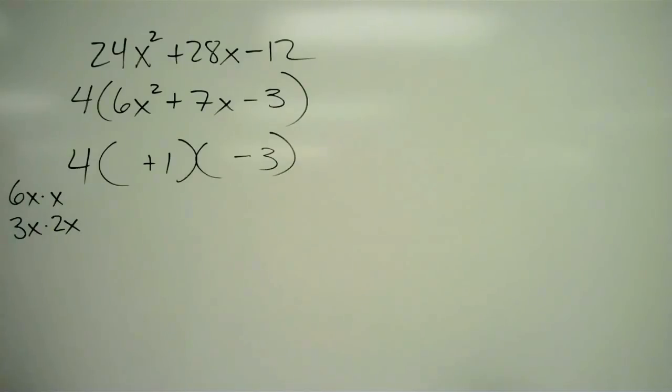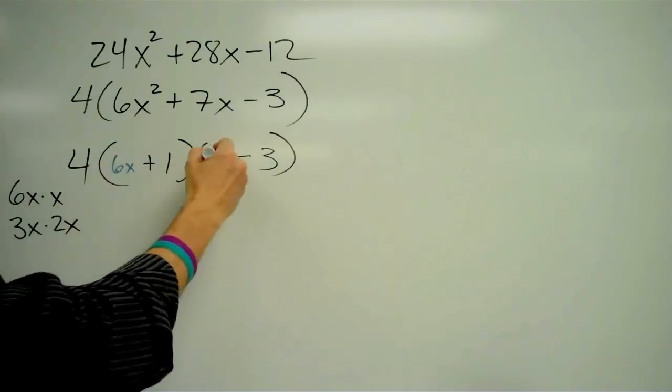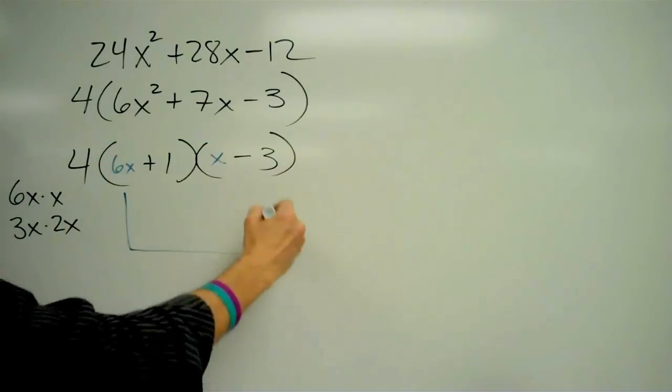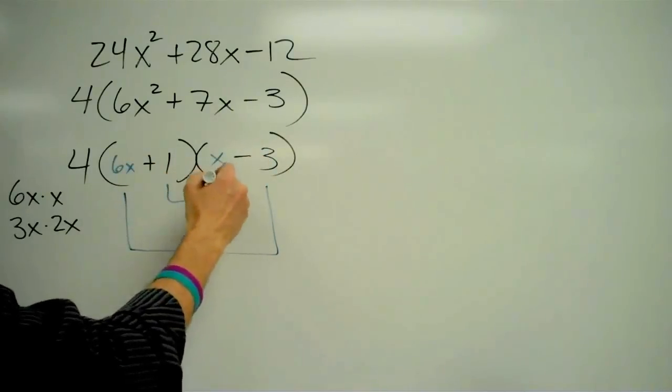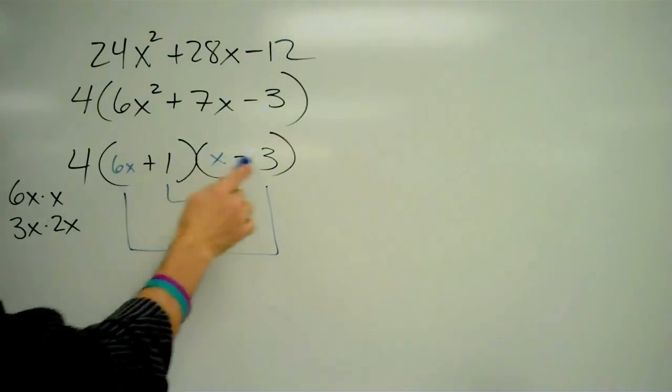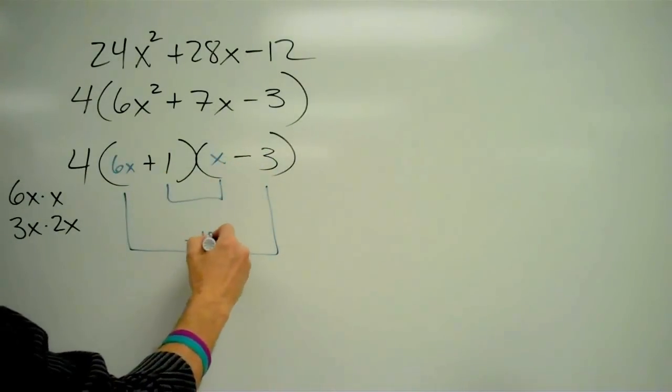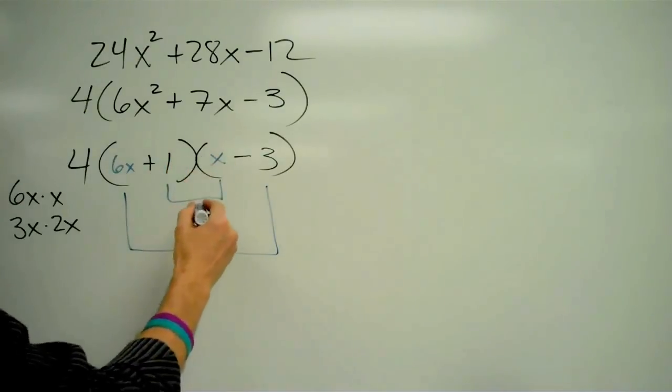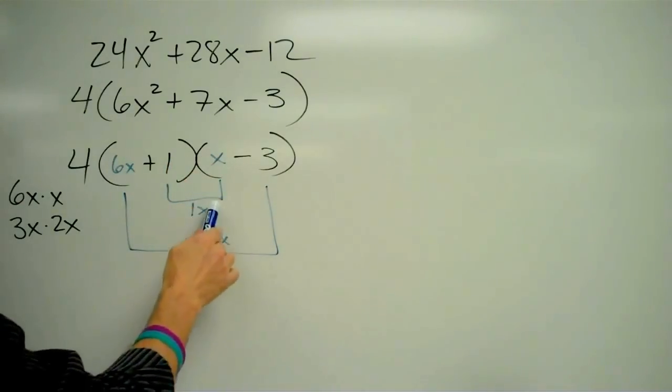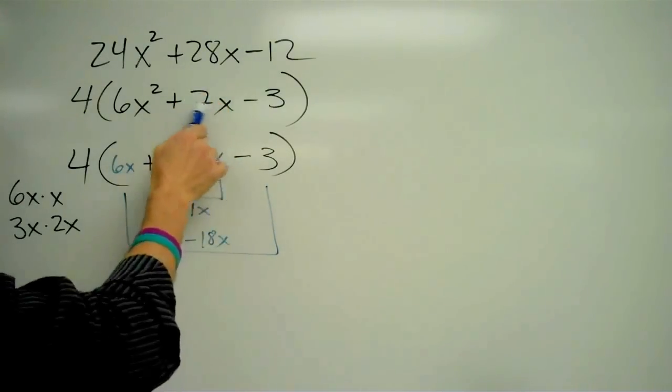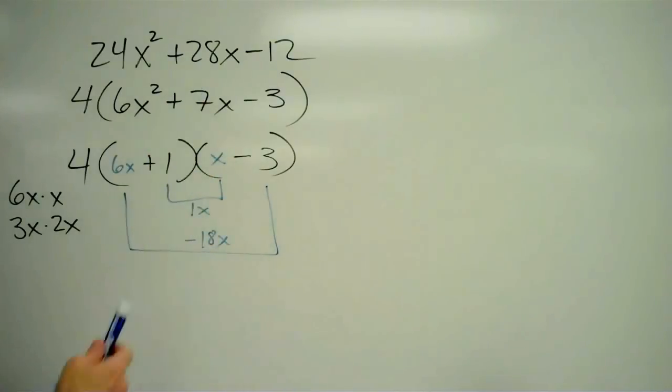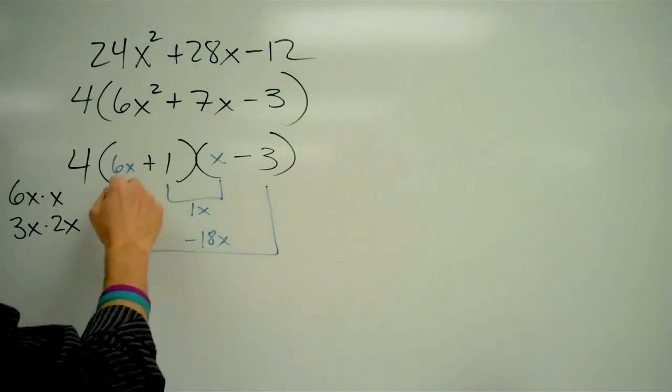Let me try 6x and x. So I'm going to take the product of these outer terms and the product of the inner terms. 6x times negative 3 is negative 18x. 1 times x is 1x. And negative 18x plus 1x does not, oops, I'm aiming for the 7. It does not equal 7x, so that's not going to work.